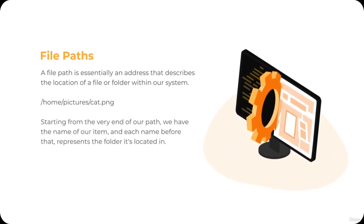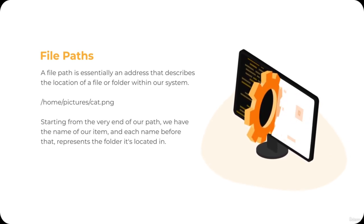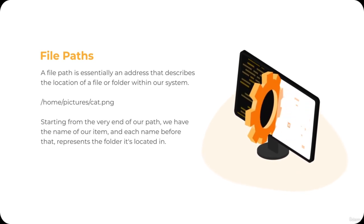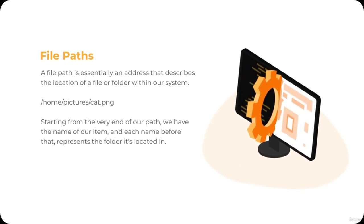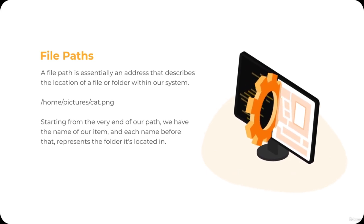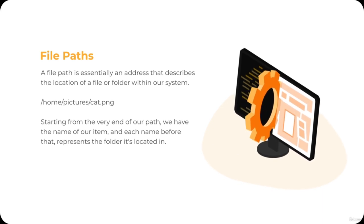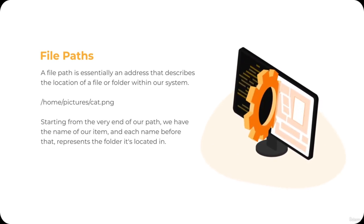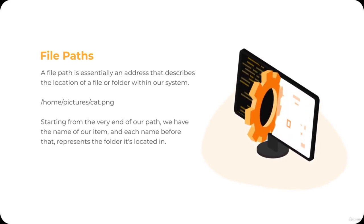The files and folders on our computer are organized using a hierarchical structure, with each folder nested within another folder. Starting from the very end of our path, we have the name of our item, and each name before that represents the folder it's located in. In our example, this path tells us that the cat.png file is located inside a folder named 'pictures', which is nested within a folder called 'home'. It's important to note that even though they're called file paths, they can describe the locations of both files and folders.